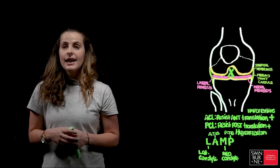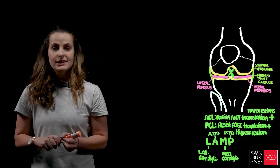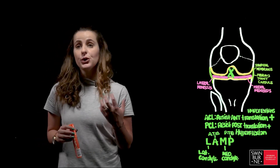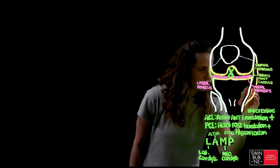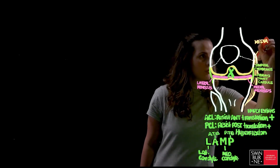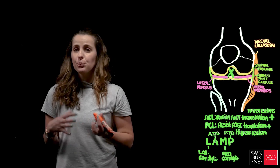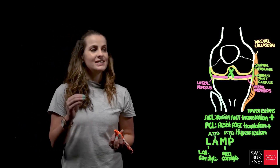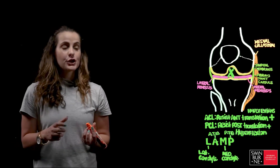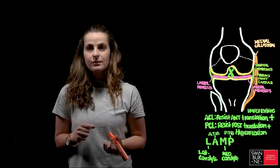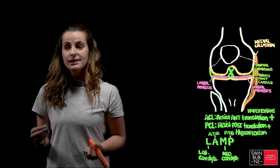The function of the collateral ligaments is to prevent the knee from rotating in the extended position. The tibial collateral ligament runs from the medial epicondyle of the femur and inserts onto the medial aspect of the tibial shaft. Looking at its shape, the medial collateral ligament is fairly broad or ribbon-like, directly attaches to the joint capsule and to the medial meniscus. Its specific function is restraint against excessive abduction of the knee.